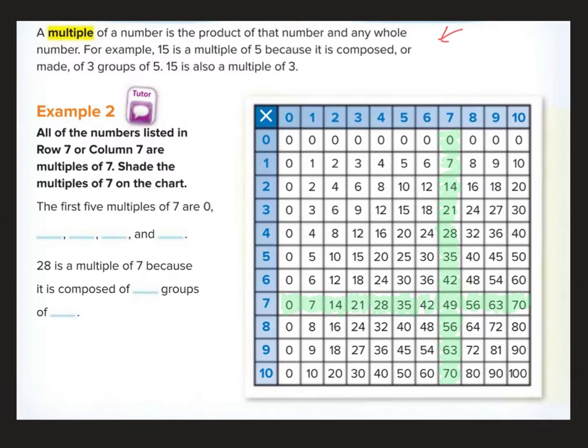The first 5 multiples of 7 are 0, 7, 14, 21, and 28. 28 is a multiple of 7 because it is composed of how many groups of 7? Well 28 is composed of 4 groups of 7. Let's keep going.